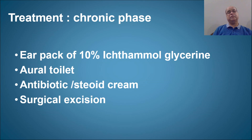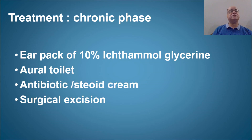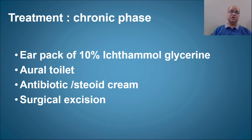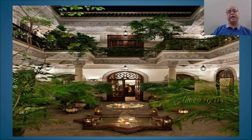In the chronic phase, pack the ear with 10% ichthymol glycerin and perform aural toilet to remove crusts and any scanty discharge. Once cleaned, apply antibiotic and steroid cream to all the walls of the external auditory canal. If there is fissuring, excessively dry skin, or narrowing, surgical excision may need to be considered, though it is very rarely required. With that, we come to the end of this session. Comments or suggestions are welcome in the comments section. Thank you very much.